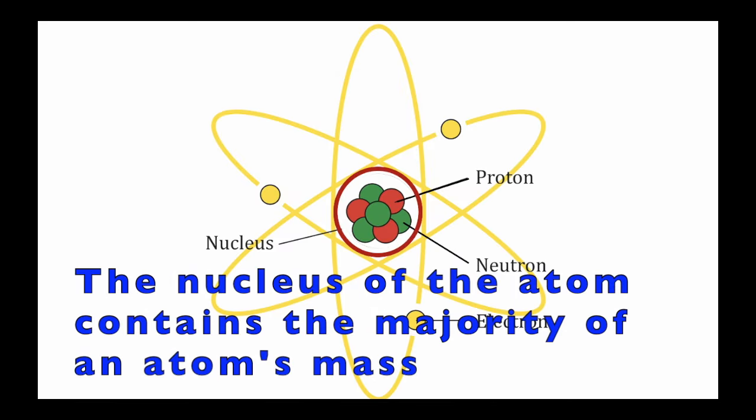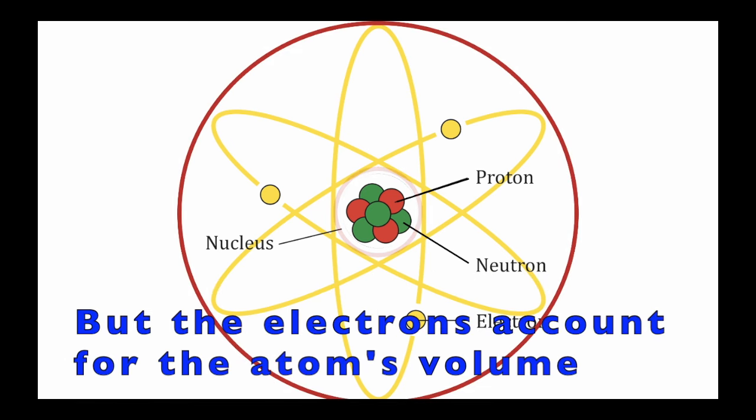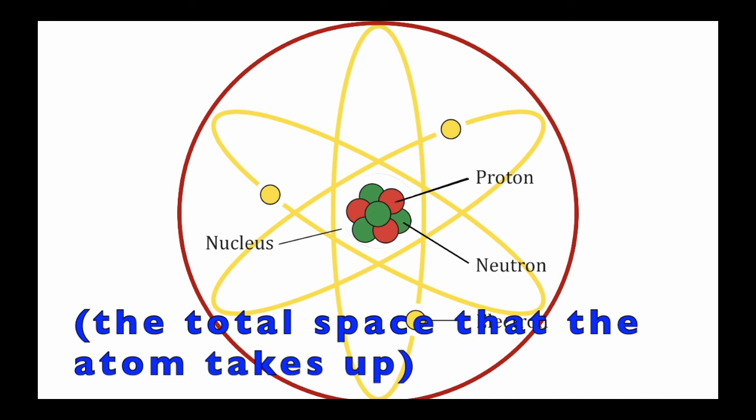The nucleus of the atom contains the majority of an atom's mass, but the electrons account for the atom's volume. In other words, the total space that the atom takes up.